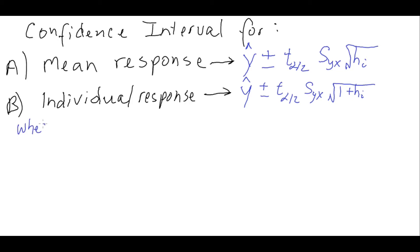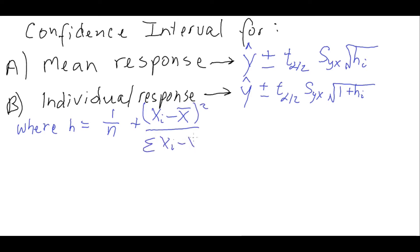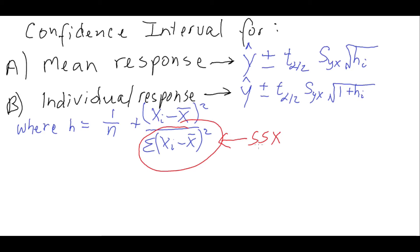Now let's look at the formula for h sub i. It is 1 over n, plus the quantity (x sub i minus x bar) squared, divided by the sum of (x sub i minus x bar) squared. This denominator is also called SSX, or the sum of the squared x's. You can get it from Excel by running the descriptive statistics function and multiplying n minus 1 times the sample variance for x.